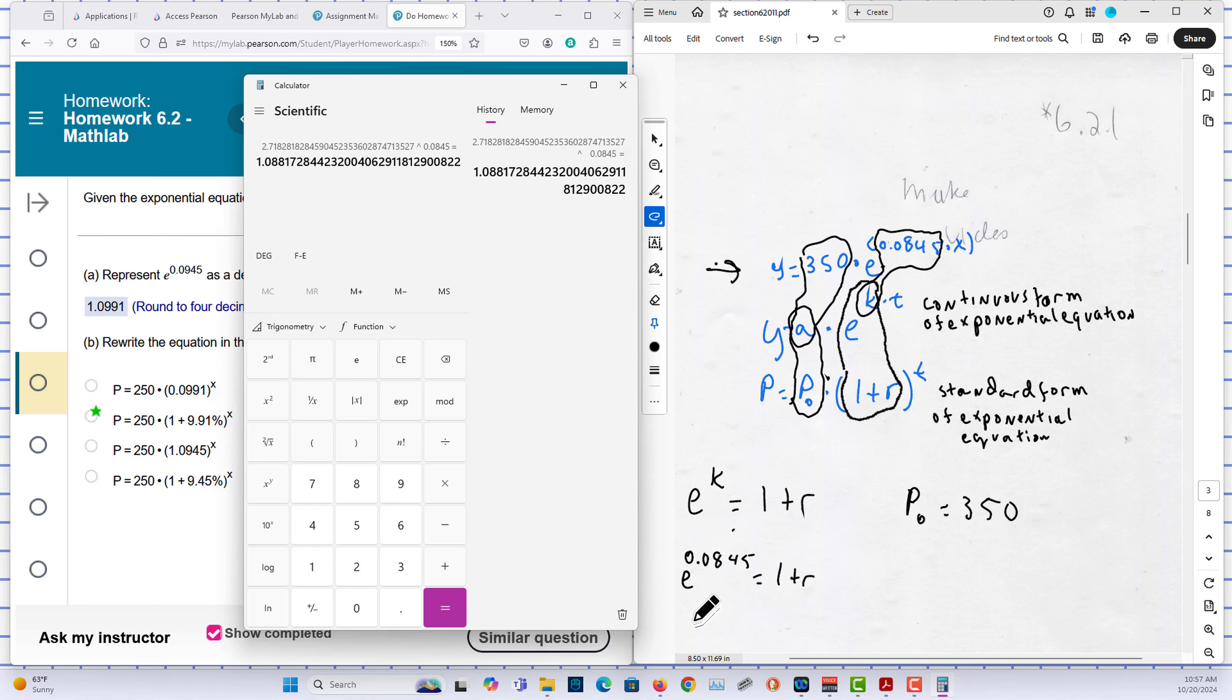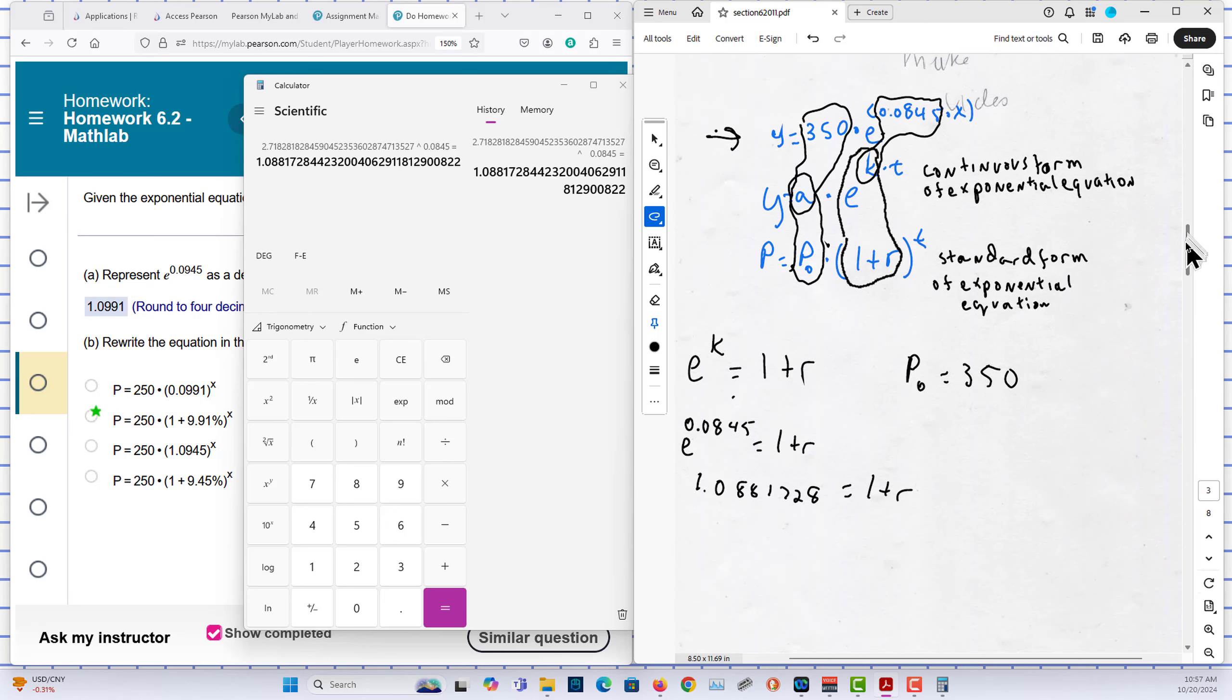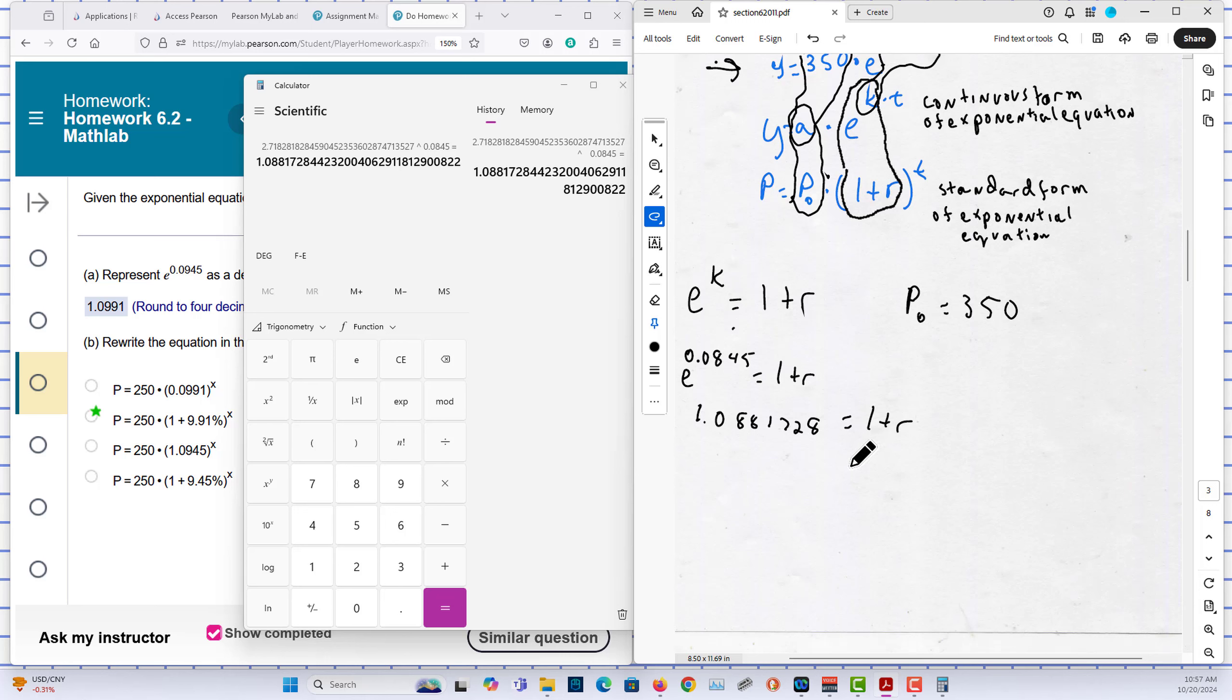And that gives me 1.08178728881728. And that's equal to 1 plus R. So I'm going to subtract 1 from both sides.